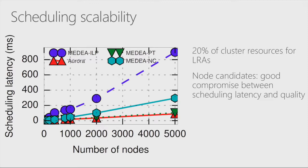Q: What branch are you targeting for contributing? A: We work off trunk, but for the demo we used Hadoop 2.7.2. So it should be available with 3.0? Yes, correct. In the latest Jira we have opened, we are working on trunk. We have not worked on backporting to a branch yet.